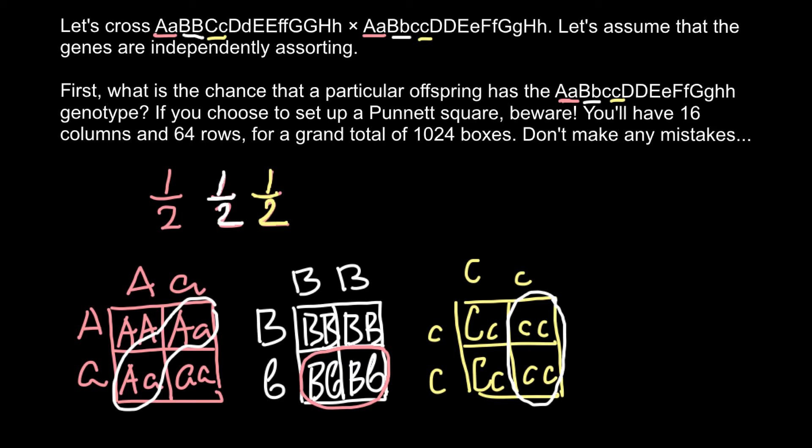For gene D, parent one is heterozygous and parent two is homozygous dominant. We don't need another Punnett square — we already know that with one homozygous dominant parent and one heterozygous parent, 50% of the progeny will be homozygous dominant. So we record one half for gene D.